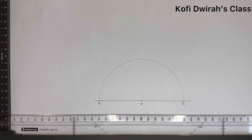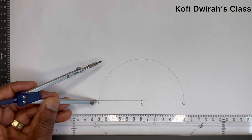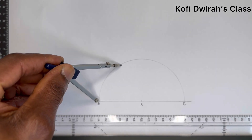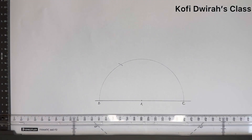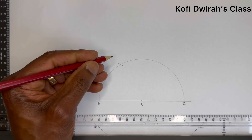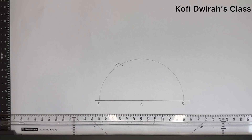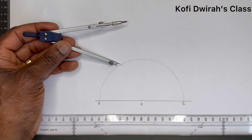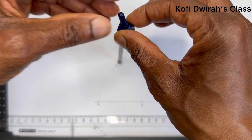With the same radius, place the compass at point B and draw an arc to get point D. Then with the same radius, place the compass at point D and draw another arc.